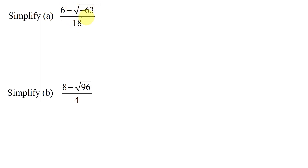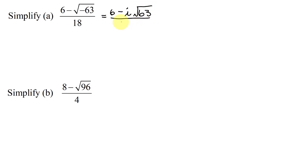So the first thing I'm going to have to do is simplify the square root of negative 63. I have 6 minus, and when you have the square root of a negative number, the first thing you do is pull out the square root of negative 1 as i. So I have i times the square root of 63, all divided by 18.